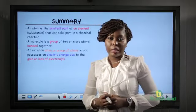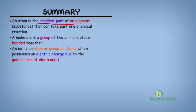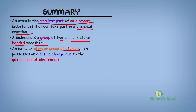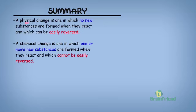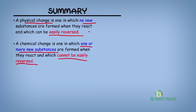Let us take a quick summary of all we've learned today. An atom is the smallest part of an element that can take part in a chemical reaction. A molecule is a group of two or more atoms that are bonded together. An ion is an atom or group of atoms which possess an electric charge due to the gain or loss of one or more electrons. A physical change is one in which no new substances are formed and which can be easily reversed, while a chemical change is one in which one or more new substances are formed and which cannot be easily reversed.